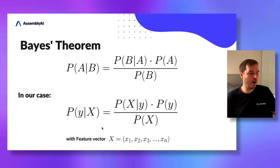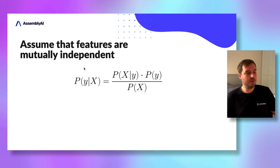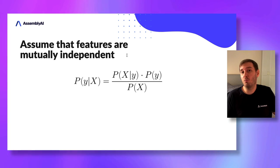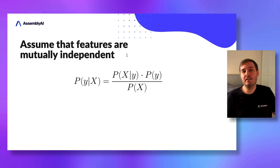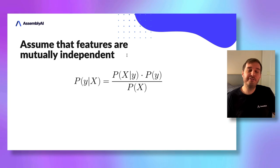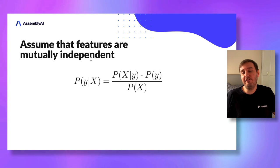Here, y are the class labels we want to predict and x is the feature vector. We then make the assumption that the features are mutually independent. For example, if we want to predict if someone takes the bus or walks, and we have two features — whether it's raining and the distance to the destination — we assume these two features are independent. In reality, this is often not the case, but this assumption still works really well for this classifier. That's also why we call it a naive assumption.